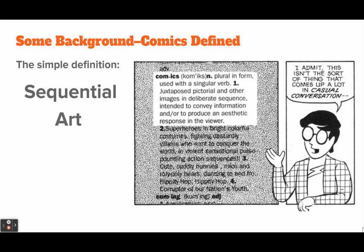McLeod's full definition: juxtaposed pictorial and other images in deliberate sequence intended to convey information and/or produce an aesthetic response in the viewer. In other words, we're going to be looking at pictures, there will be some words, we're going to convey a story, and with that story we should go a level or two deeper, producing some sort of aesthetic response to both the art of the story and the pictorial images. As McLeod says, this isn't something that comes up in casual conversation, but for our purposes we're looking at art that conveys a story.